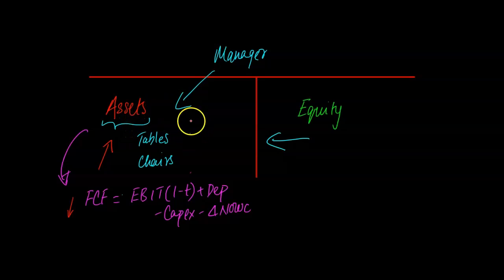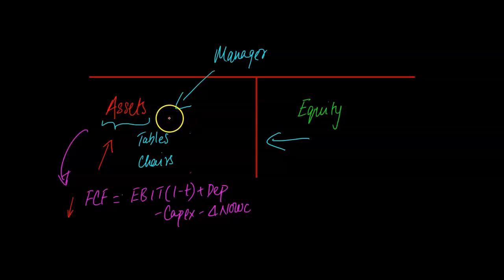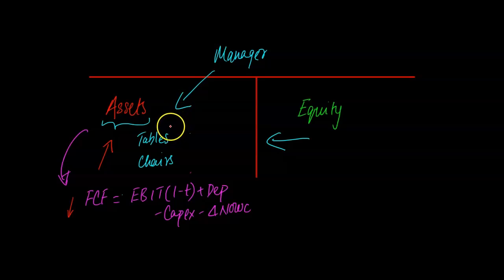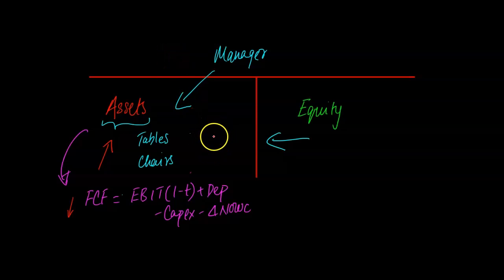Depending on the kind of business, cash flows from some assets are more risky than others. Restaurants are very susceptible to inflation and unemployment. Compare that to a business like Walmart — even if unemployment or inflation goes up, people still need basic necessities, so Walmart's cash flows might go down but not by as much. Conversely, if things improve, people may shift to Whole Foods instead. The point is that some businesses have cash flows more sensitive to macroeconomic shocks like inflation, unemployment, and interest rates — and that is what we mean by a firm's asset beta.